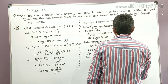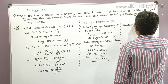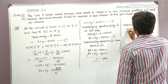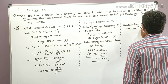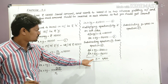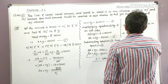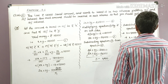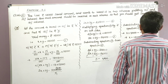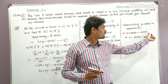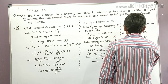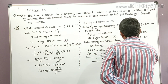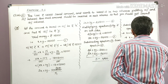Substituting y equal to 4,800 in Equation 1: x plus y equals 12,000. That is x plus 4,800 equals 12,000. This implies x is equal to 12,000 minus 4,800. Taking 4,800 to the right side, it becomes minus 4,800. Therefore x is equal to 7,200.